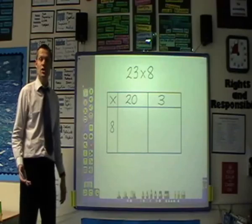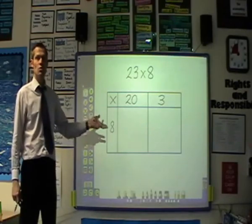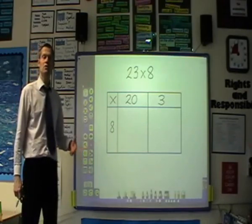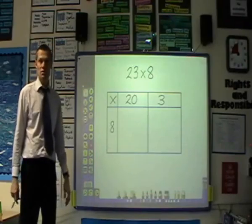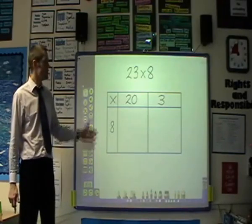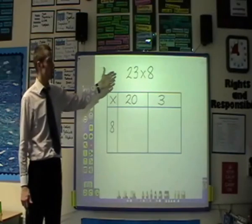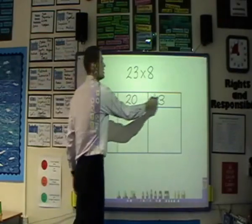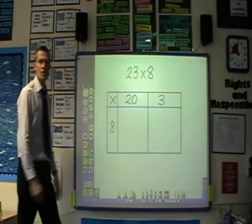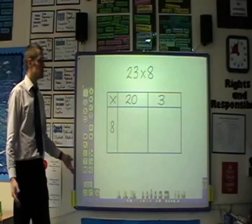In Lower Key Stage 2 we introduced the grid method as a way of showing the children how to partition numbers before multiplying them. So in this example, the 23 has been broken down into 20 and 3 and will then in turn be multiplied by 8.